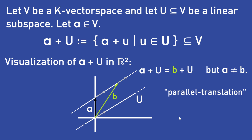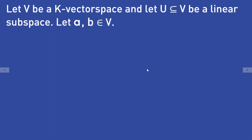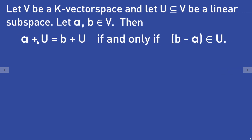You may ask yourself if there is some criterion to check if two affine subspaces of U are the same. There is. Let v be a k vector space and let U be a linear subspace. Let a and b be elements of v. Then a plus U is equal to b plus U if and only if b minus a is an element of the subspace U.